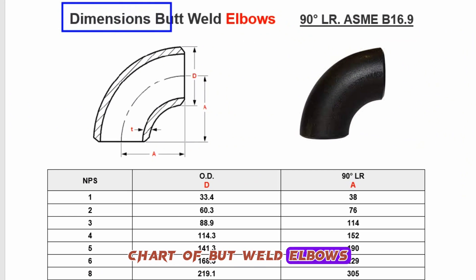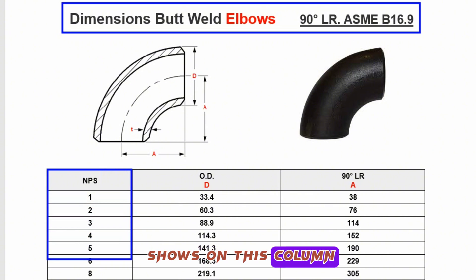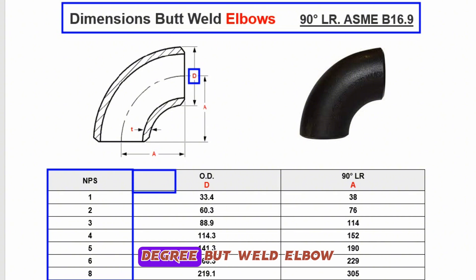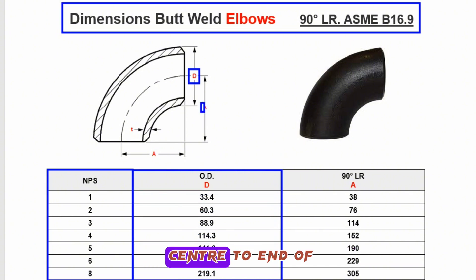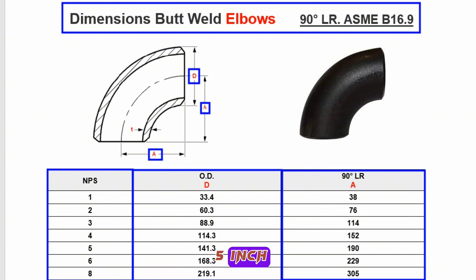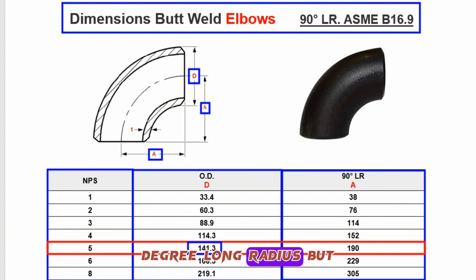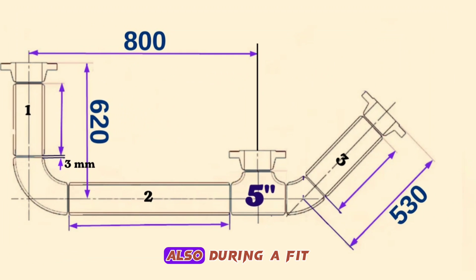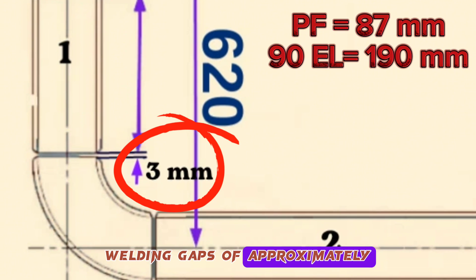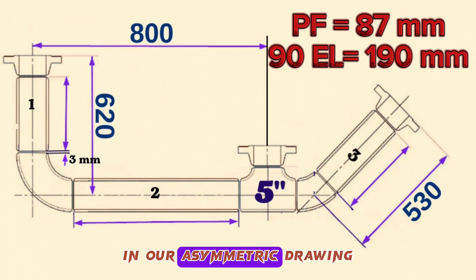Now let's look at the dimensions chart of butt weld elbow's 90-degree long radius. The NPS column shows the nominal pipe size, the D column shows the outside diameter, and the A column shows the center-to-end dimension of the 90-degree long radius butt weld elbow. For the 5-inch row, the outside diameter is 141.3 millimeters and the center-to-end is 190 millimeters. Also, during fit-up in pipelines, welding gaps of approximately 3 millimeters should be placed between pipe fittings for better root welding. In our isometric drawing there will be fit-ups in 8 places, and we should consider these 3-millimeter gaps when calculating pipe lengths.